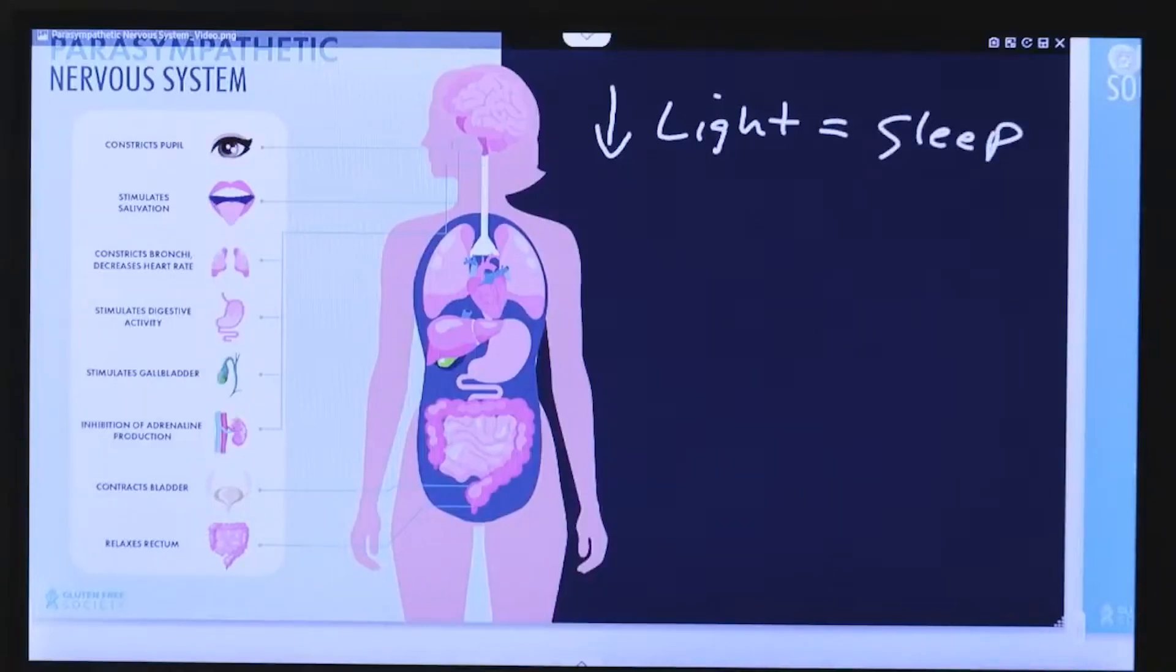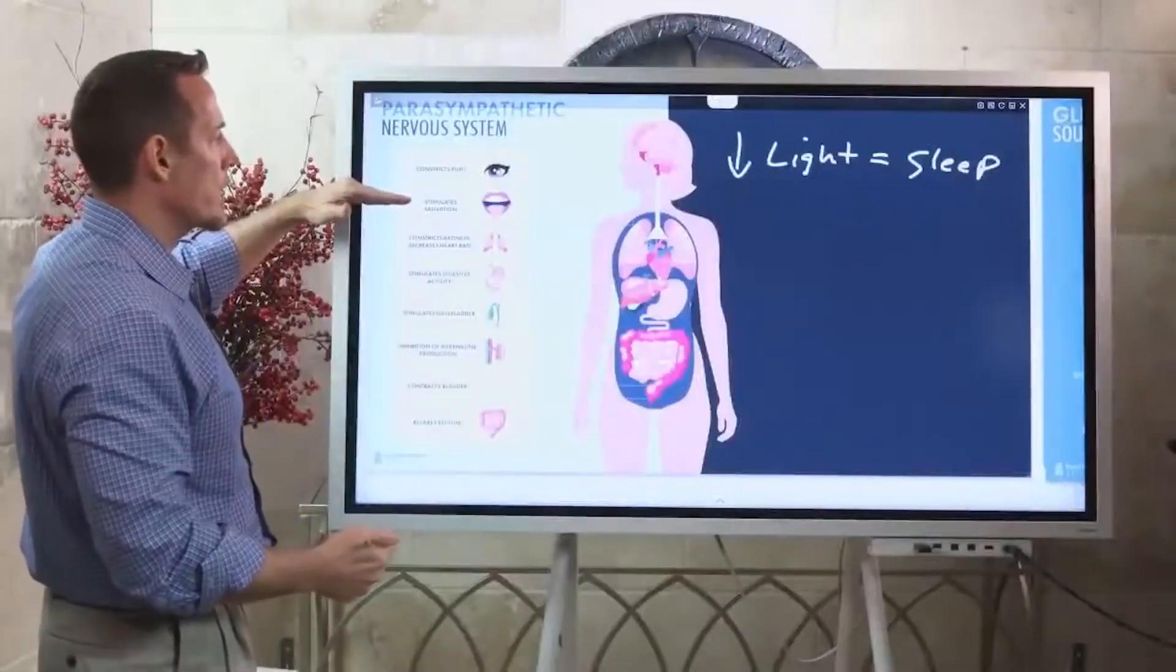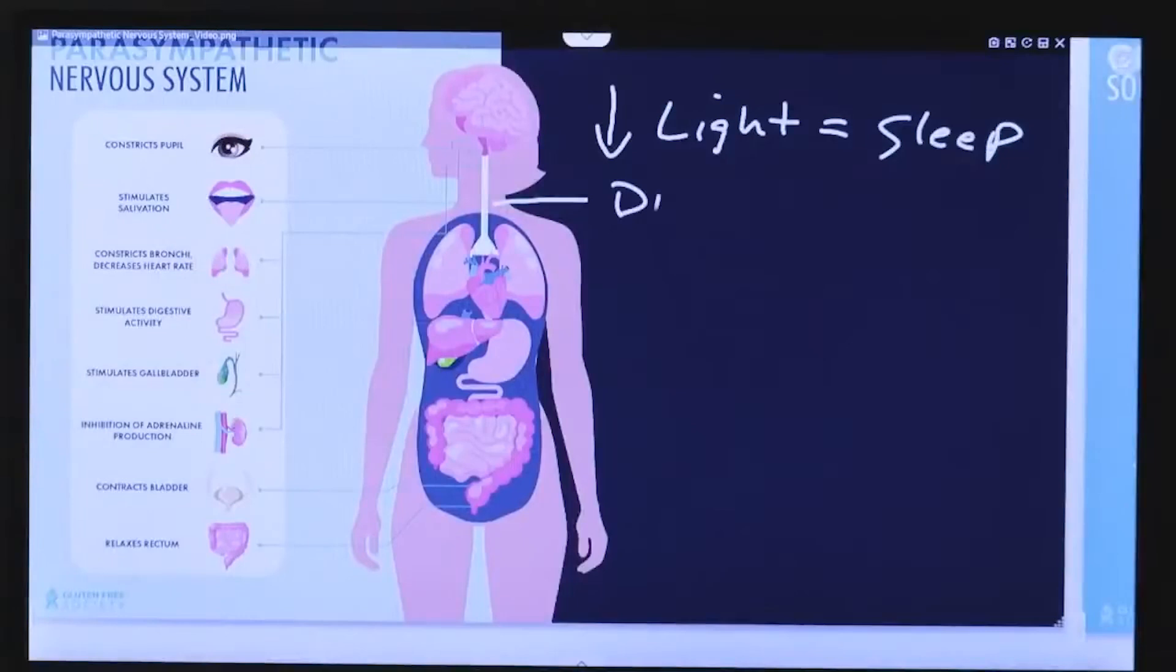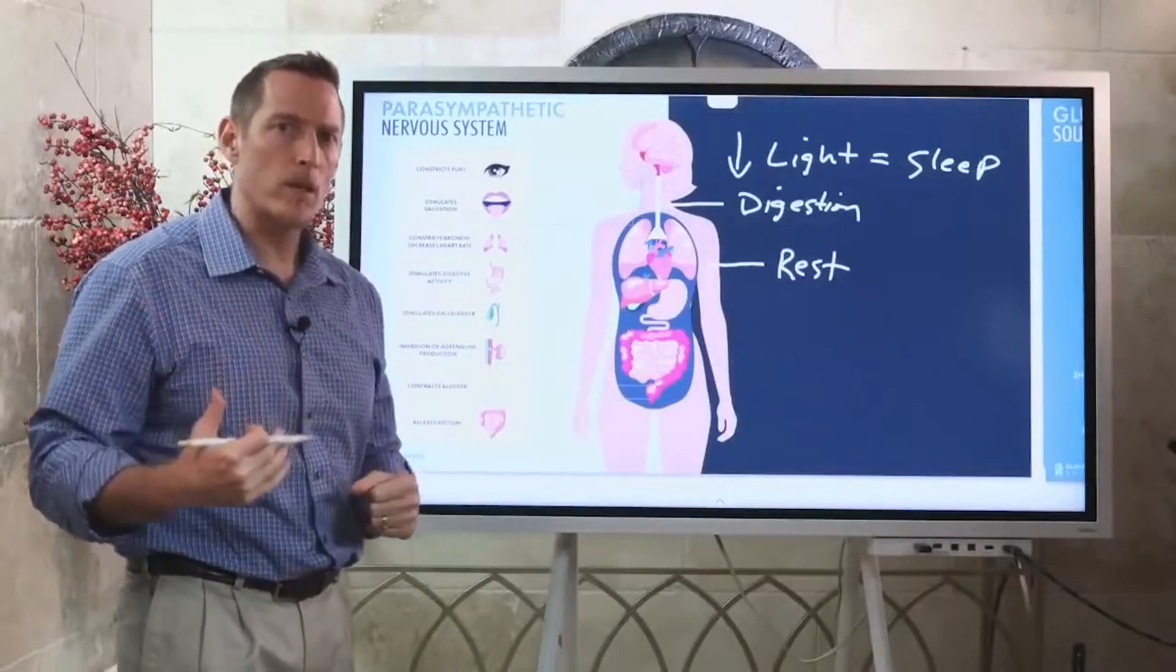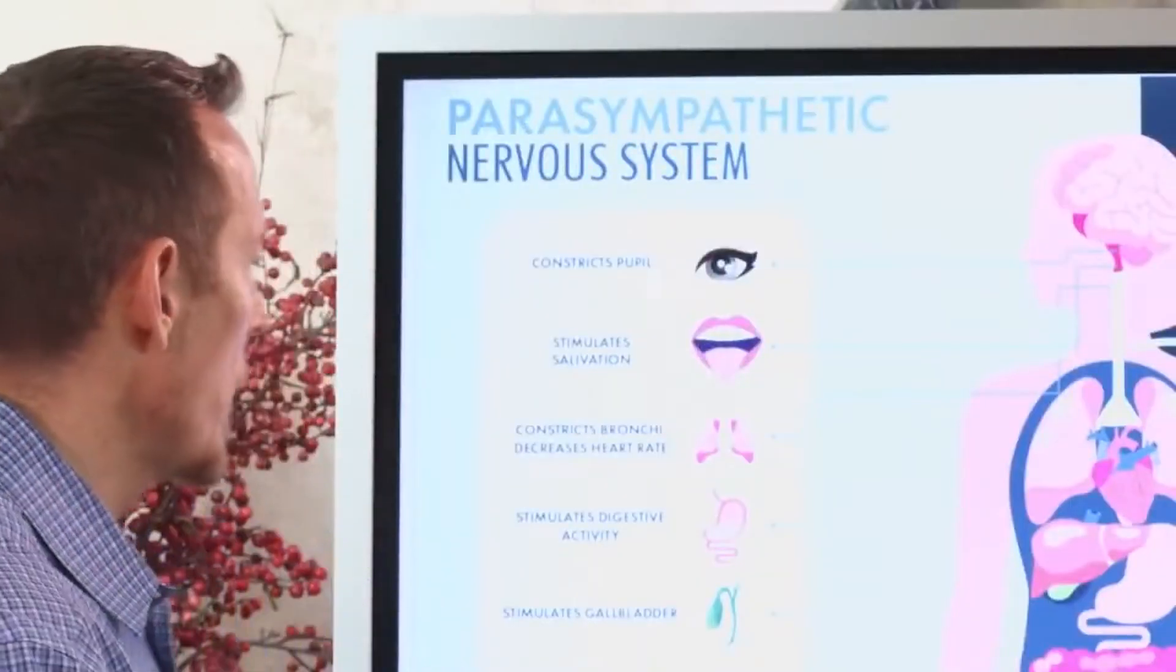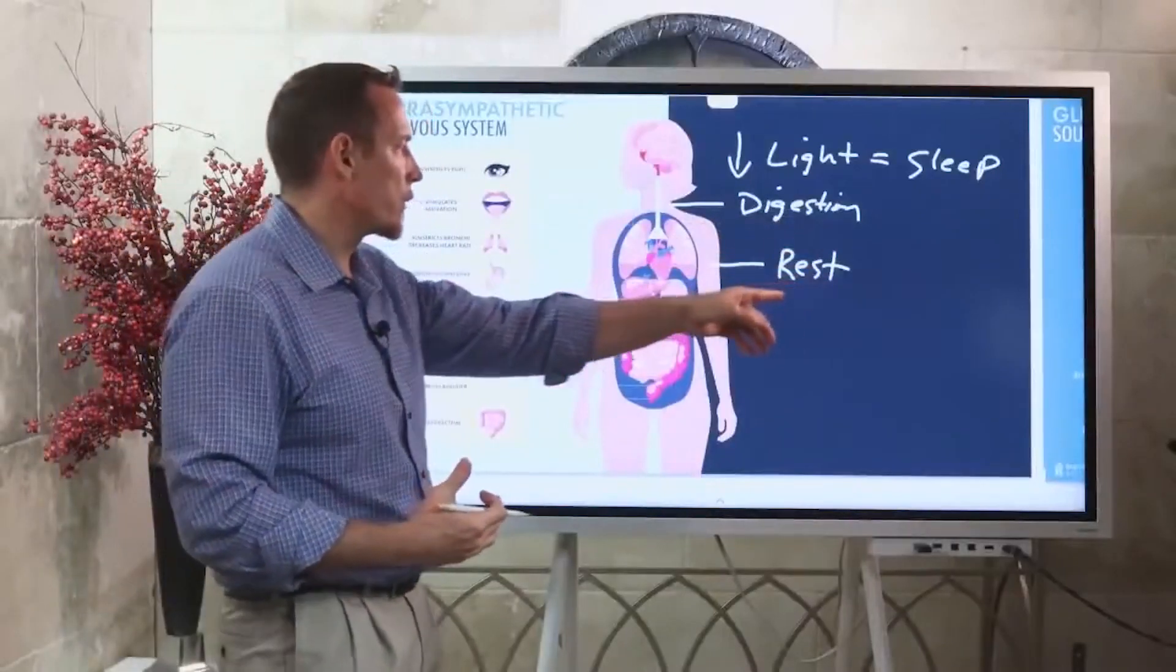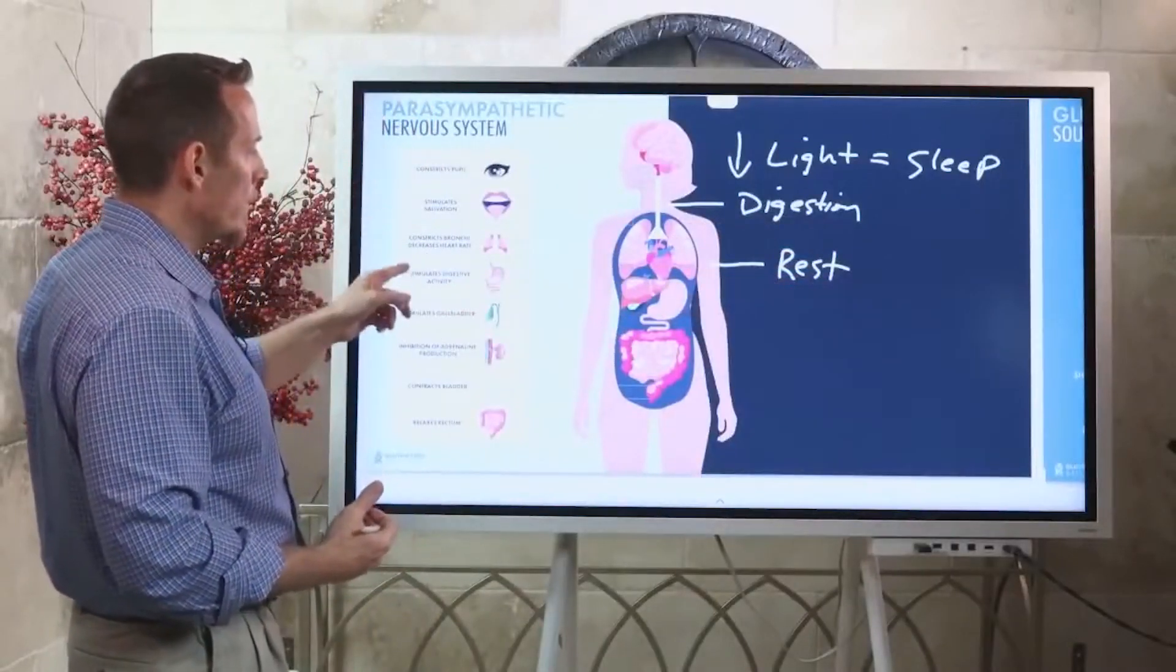This is parasympathetic - it's rest, relaxation, sleep, digestion. Stimulate salivation. Saliva has digestive enzymes in it like amylase that helps you break down food components. It constricts the bronchi and decreases the heart rate, prepping your lungs and heart for rest. When do we want our lungs to fill with more oxygen and our heart rate to go up? When we're in a fight or flight state, when we need our heart and lungs at full capacity. But when we're at rest we need these things to be able to relax.